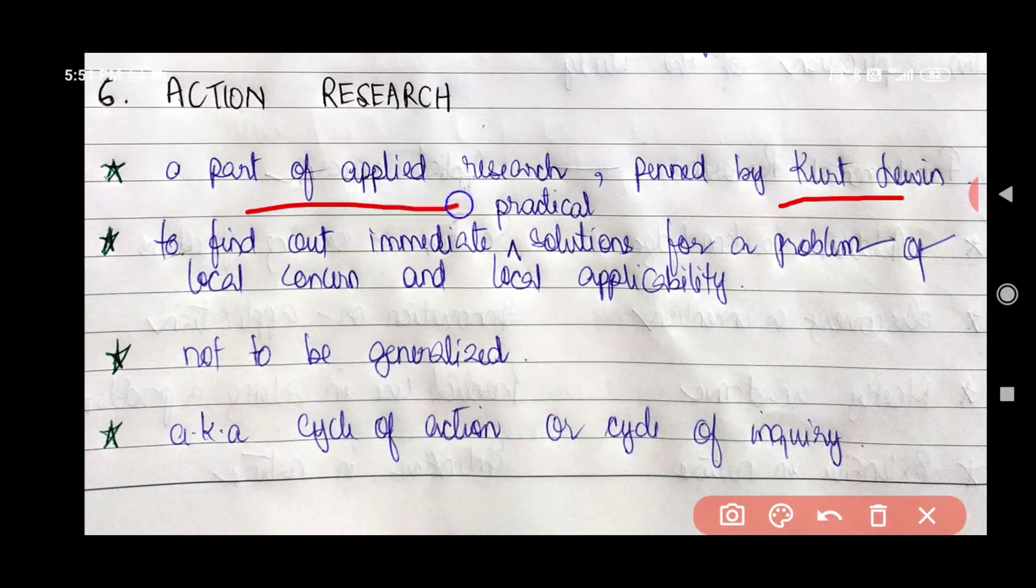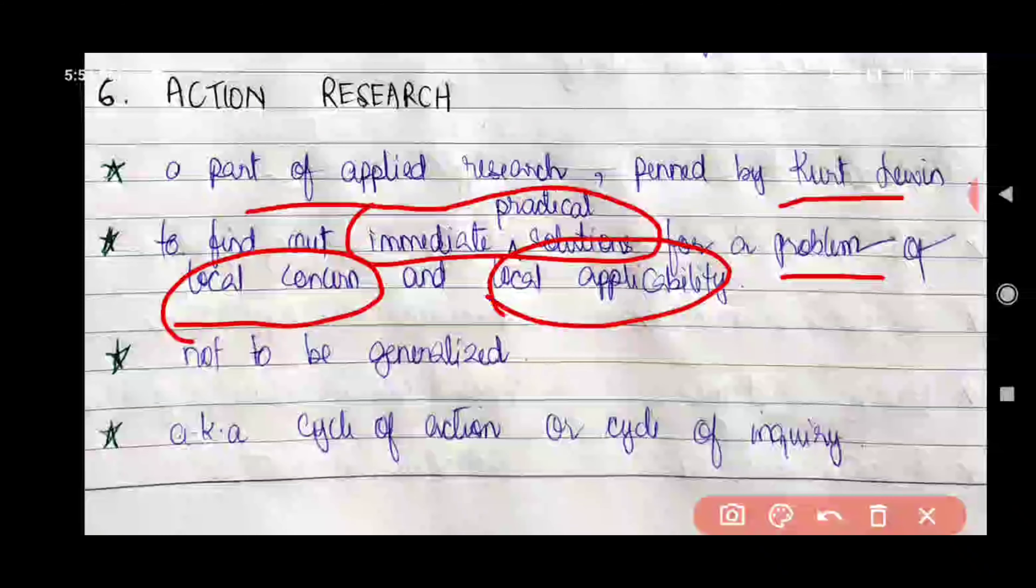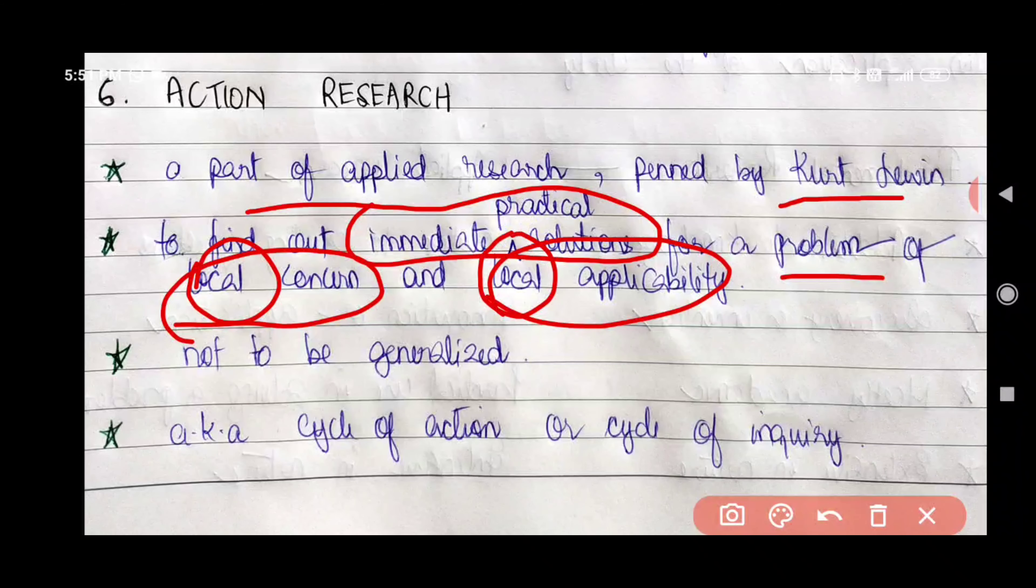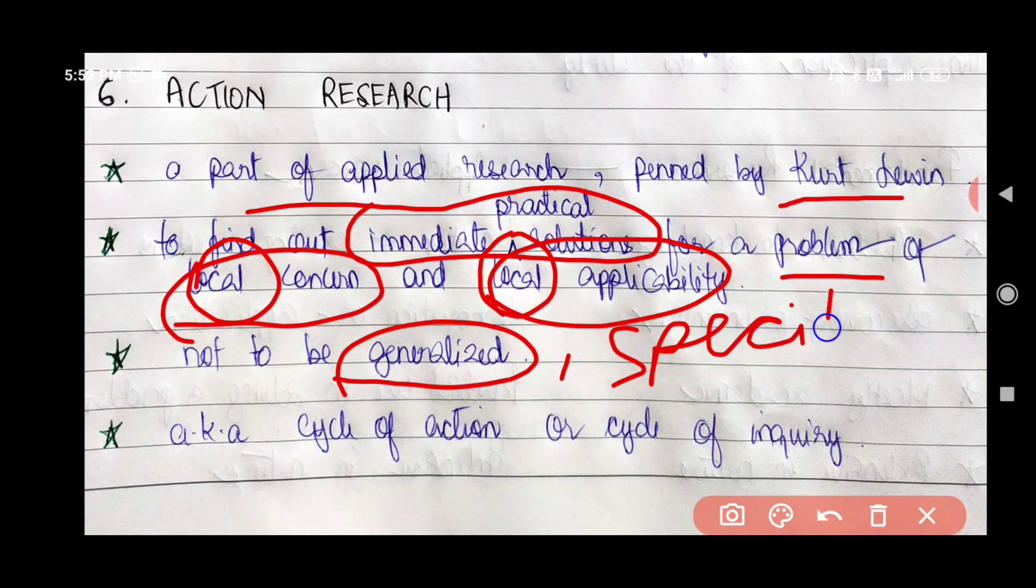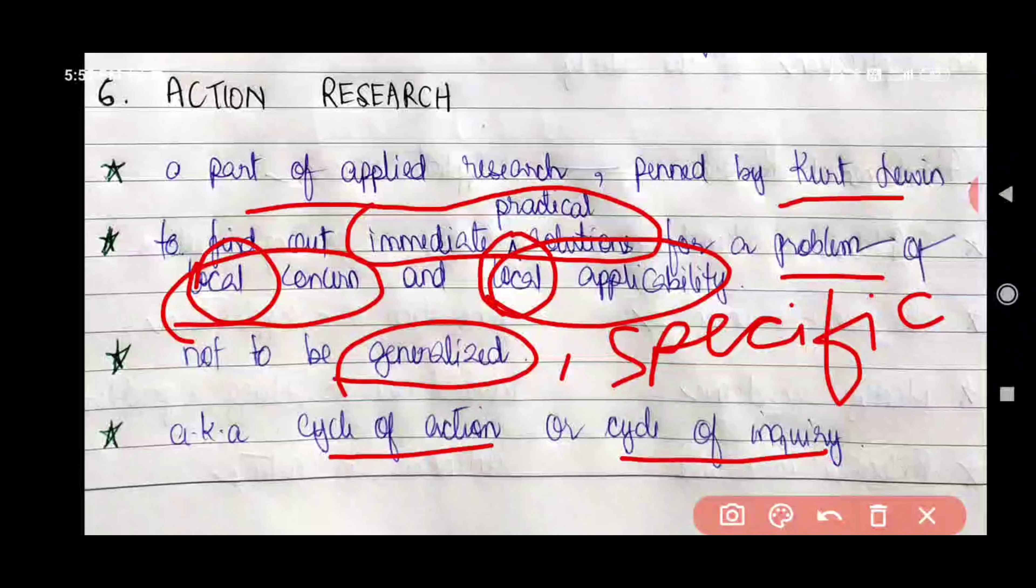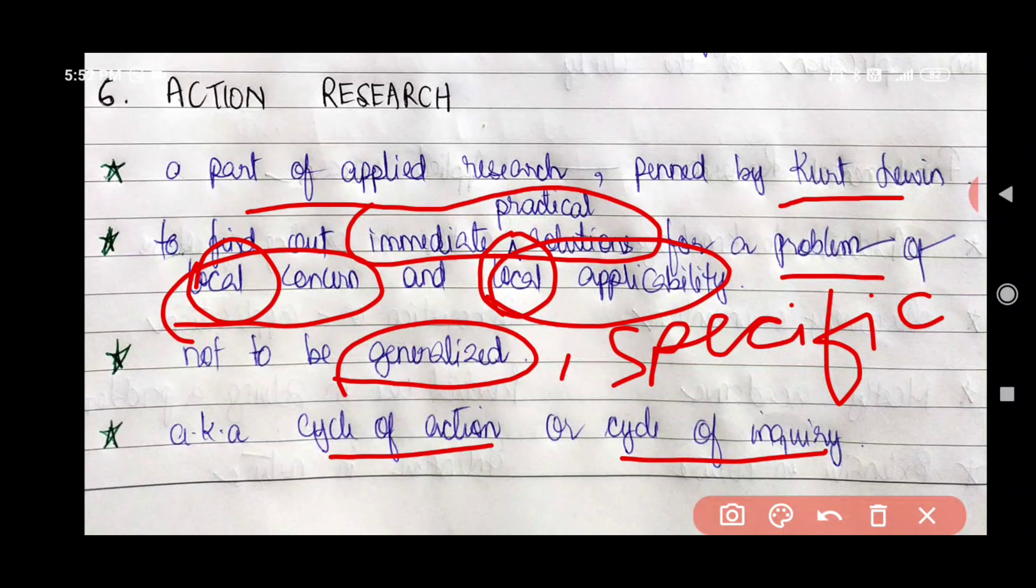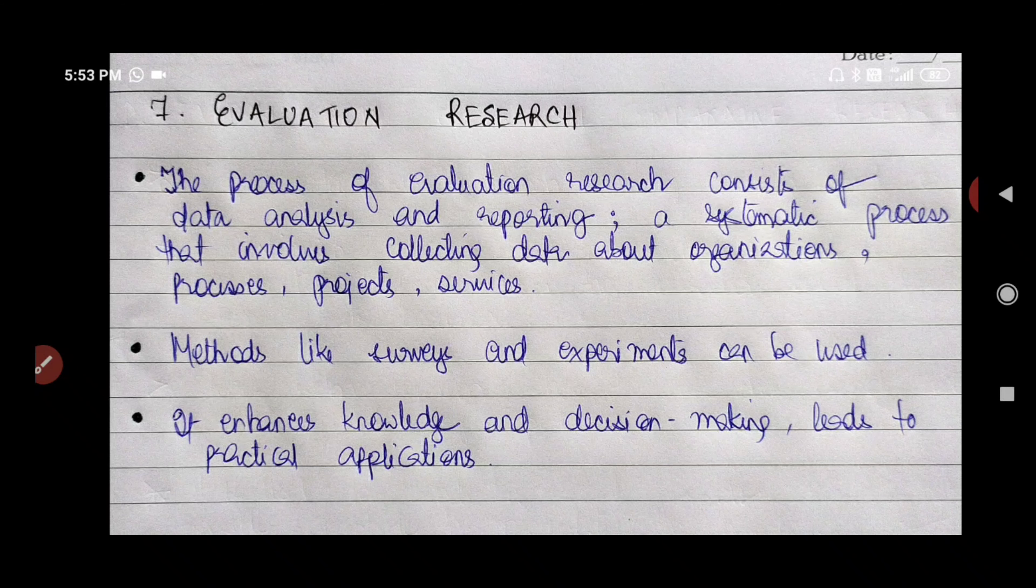This type of research is to find out immediate practical solutions for a problem of local concern and local applicability. Note the word local - this is very important. It could mean a classroom, it could mean an office, it could mean a school, and it is not to be generalized. What is true for one group may not be true for another. Whatever is true for that small group may not be true for the whole general population. It is also called cycle of action or cycle of inquiry because it follows this process that is repeated over and over again.